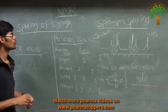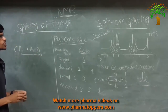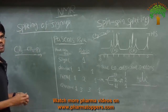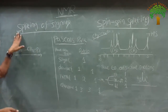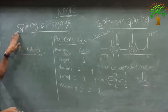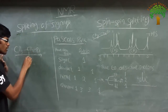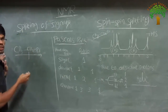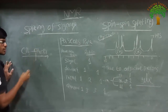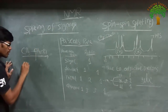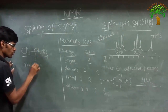My friends, now we are going to discuss about the splitting of the signals. The splitting of the signal is mainly due to the neighboring protons. The splitting of the signals is calculated by the n plus 1 rule.